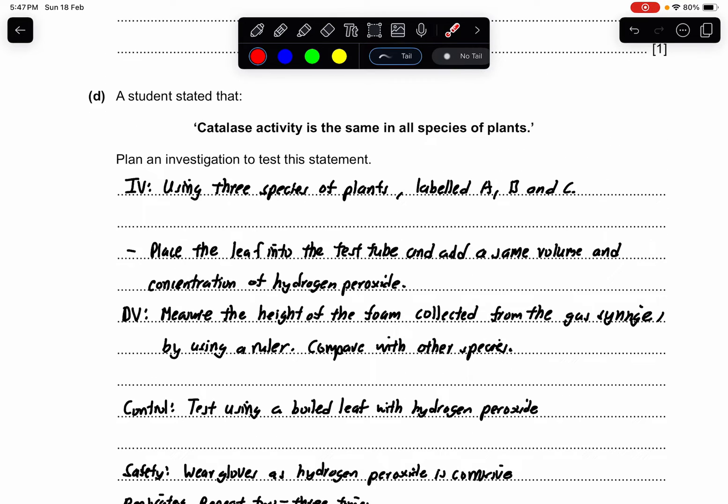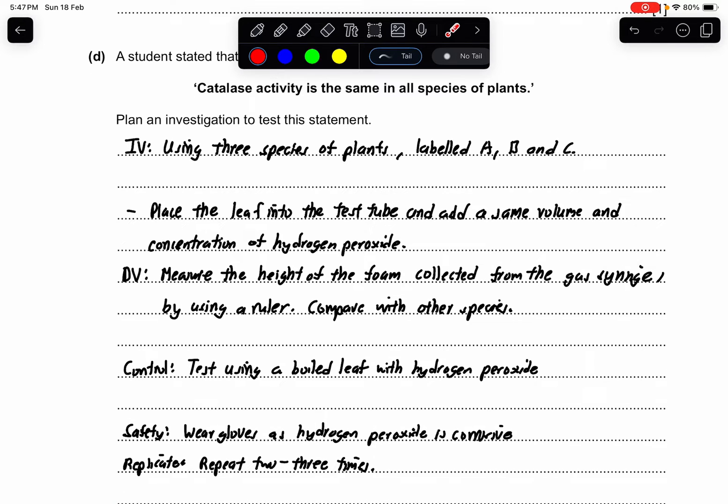D: a student stated that catalase activity is the same in all species of plant. Plan an investigation to test this statement. So this is six marks, which I always use: I don't care so run away. I is IV, D is DV, C is CV, S is safety, R is repeat, and A is average if there are numerical values.